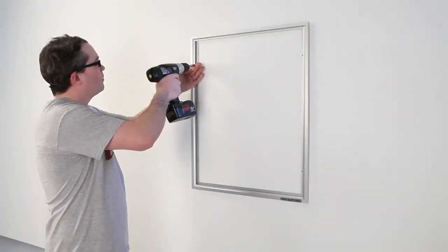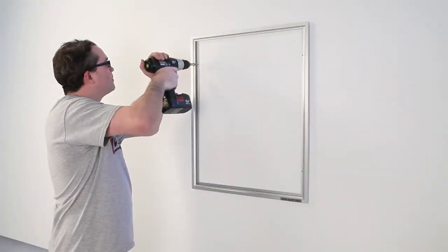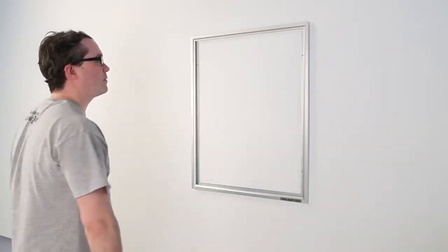Align the frame with the wall anchors you just put in. Now, use the hand drill with a Phillips head bit to fasten the screws.